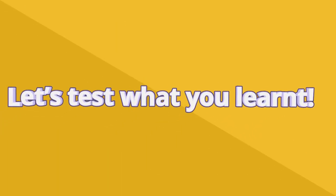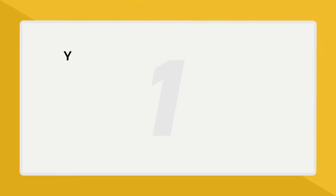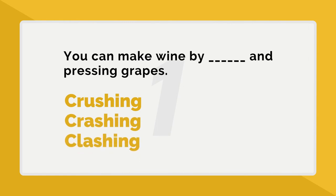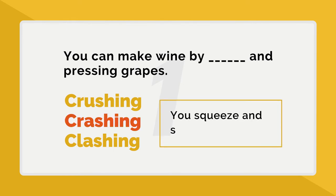Let's test what you learned. Number one: you can make wine by pressing grapes — which word do you think is the best fit? Crushing, crashing, or clashing? In this case you would choose crushing because you squeeze and squash the grapes.